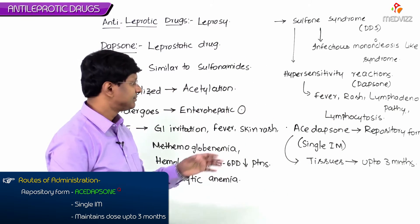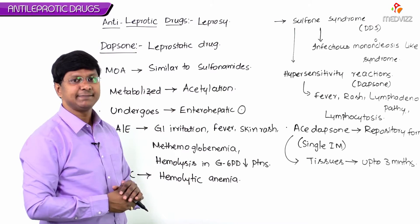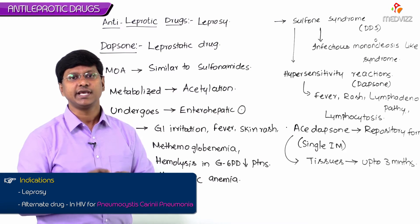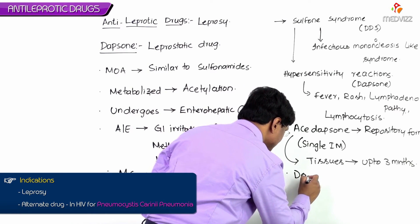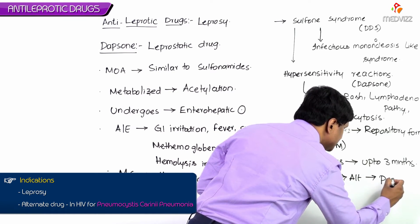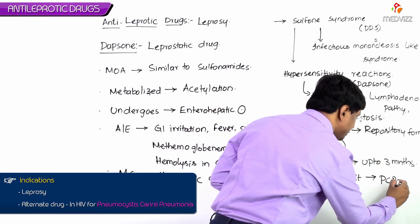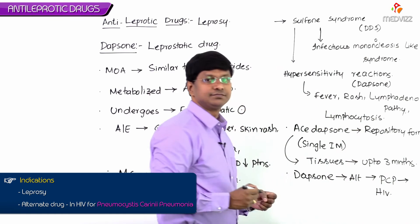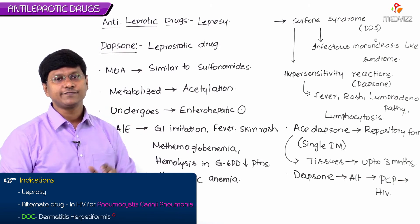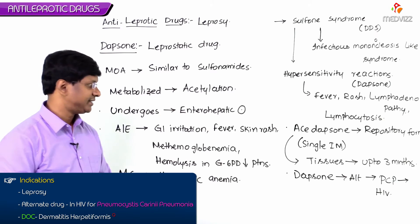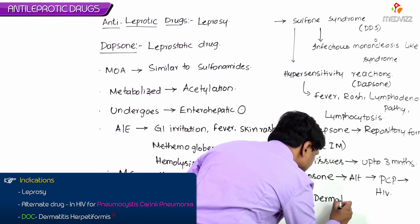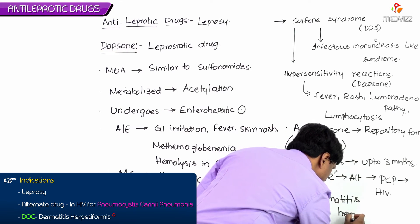Dapsone is also an alternative drug for the treatment of Pneumocystis jirovecii infection in HIV patients. Additionally, dapsone is the drug of choice for the treatment of dermatitis herpetiformis.